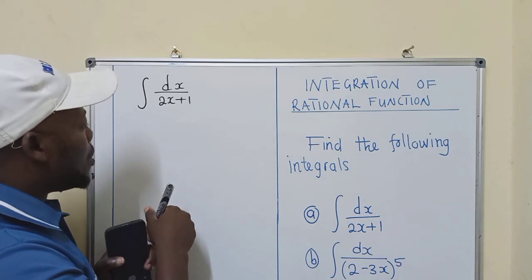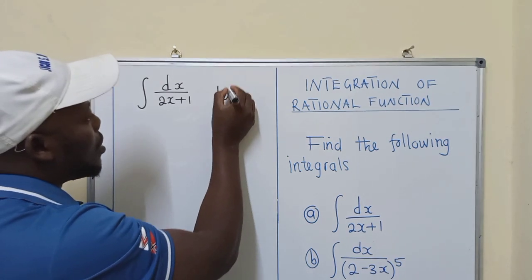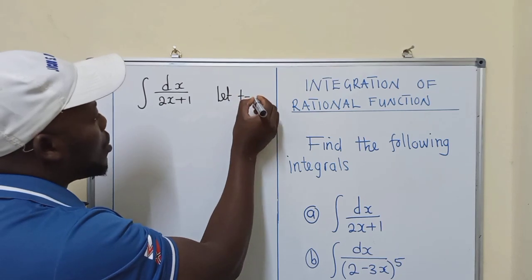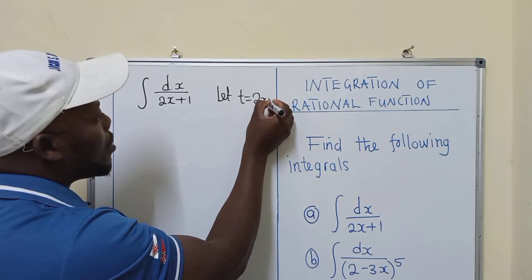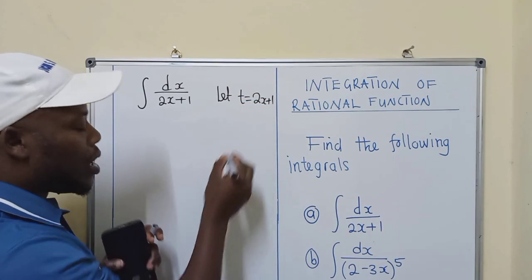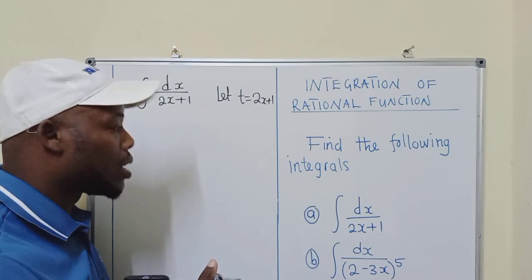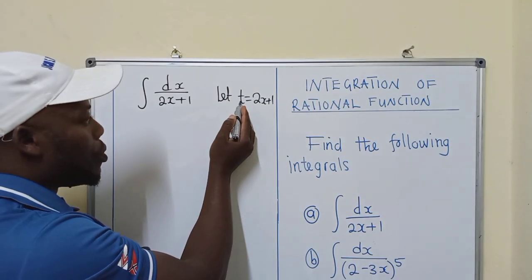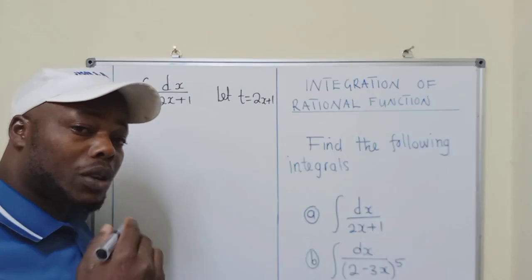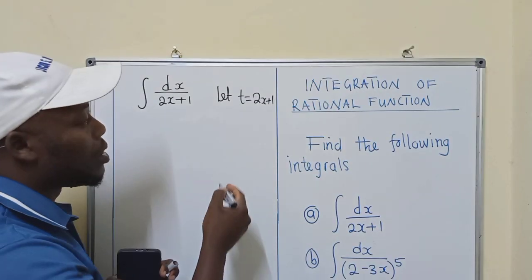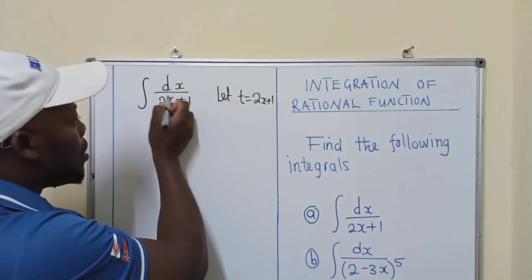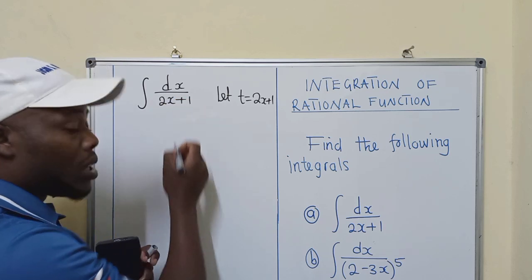All what you need to do is to let t be equal to 2x plus 1. So any letter that you so wish to pick. So I decided to pick t, if you want you can pick u or v, whichever letter you want. So t is equal to what is down here, the denominator.